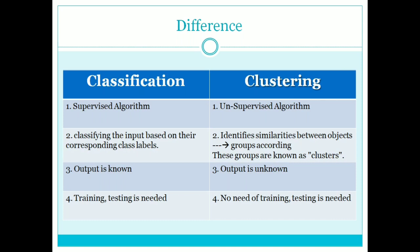In supervised learning, data is classified based on labels. In clustering, data is grouped based on common features. Classification is based on input and corresponding class labels, whereas clustering identifies similarity between different objects and groups them together — these groups are known as clusters.